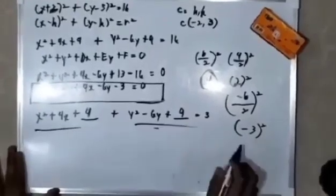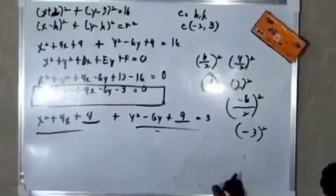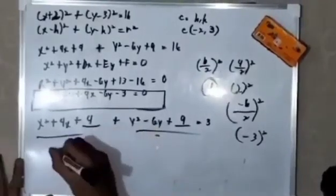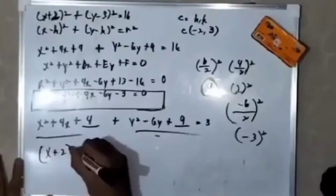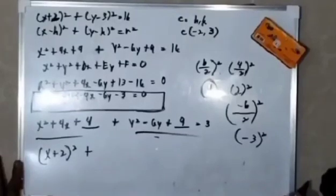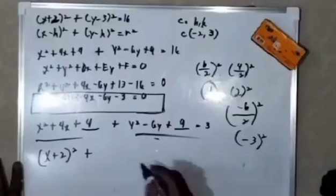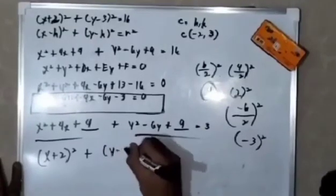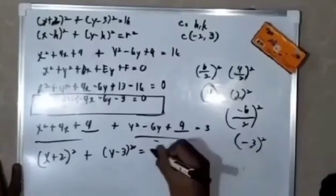Now it is a perfect square trinomial and can be factored. So x squared plus 4x plus 4 is x plus 2 squared, plus y squared minus 6y plus 9 is equal to 3, and y minus 3 squared.